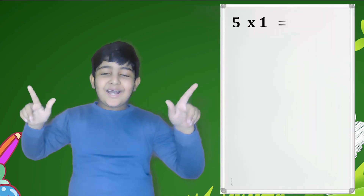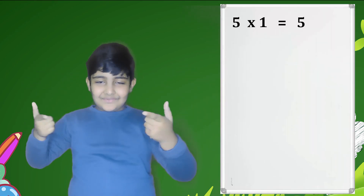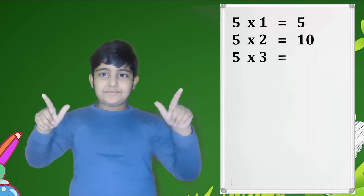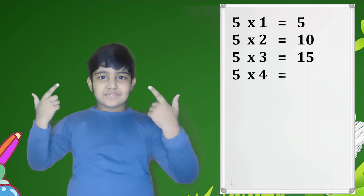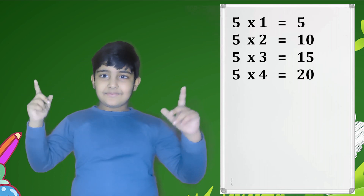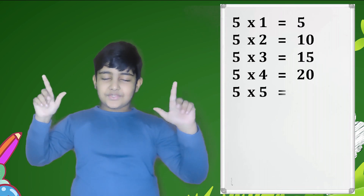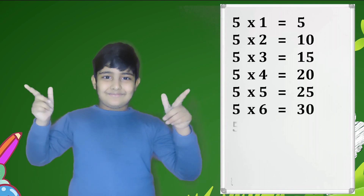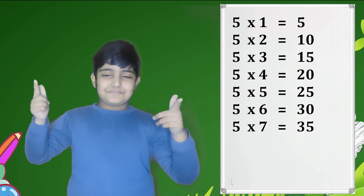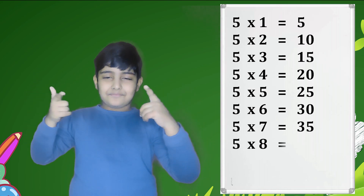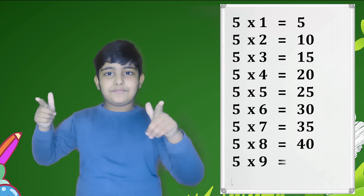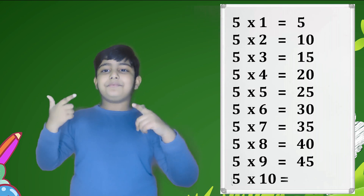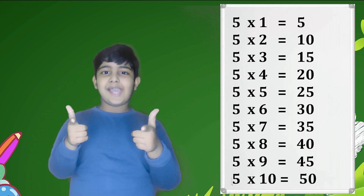Five ones are five, five twos are ten, five threes are fifteen, five fours are twenty, five fives are twenty-five, five sixes are thirty, five sevens are thirty-five, five eights are forty, five nines are forty-five, five tens are fifty. Let's sing again.